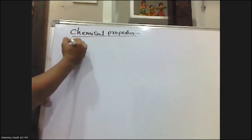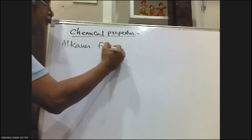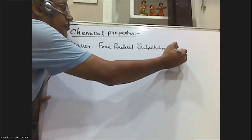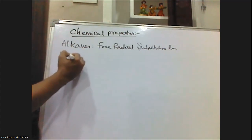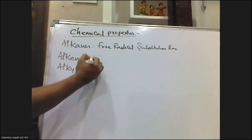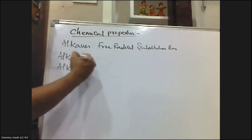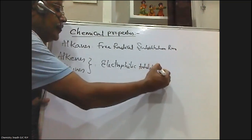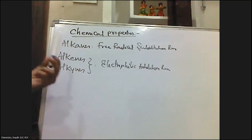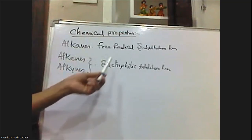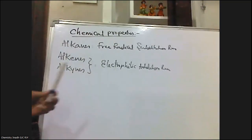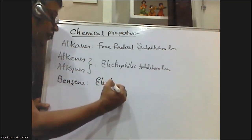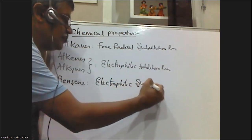In the alkanes topic, we have seen that alkanes mainly participate in free radical substitution reactions. If you see alkenes and alkynes, the main reactions participated by these are electrophilic addition reactions. Along with electrophilic addition reactions, they also participate in ozonolysis, polymerization, and oxidation. But the major reactions of alkenes and alkynes are electrophilic addition reactions. Benzene, however, mainly participates in electrophilic substitution reactions.